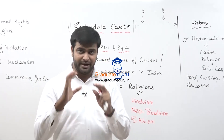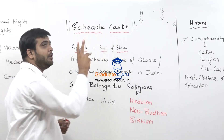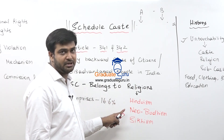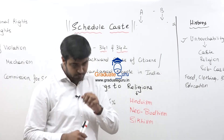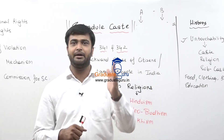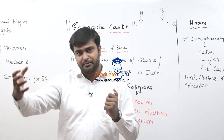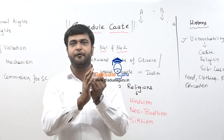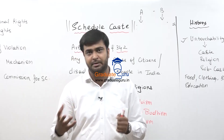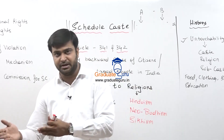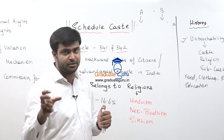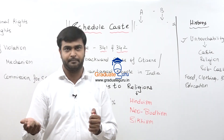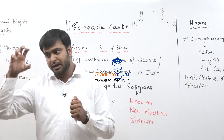Now, it can be any religion, but in India what they have said is Schedule Caste will belong only to three religions. The first religion is Hinduism, the second is Neo-Buddhism, and the third is Sikhism. During the 1950s, Dr. Baba Sahib Ambedkar felt that there were many atrocities happening against Dalit people, so he asked a lot of Dalit people to follow Buddhism. He himself converted from Hinduism to Buddhism. That movement is known as the Dalit Buddhist movement, also known as Neo-Buddhism.